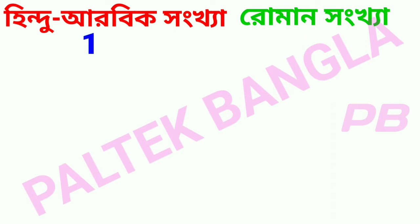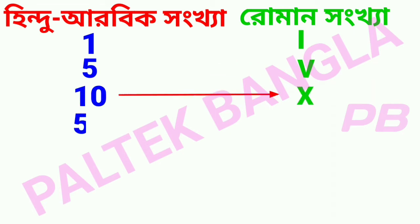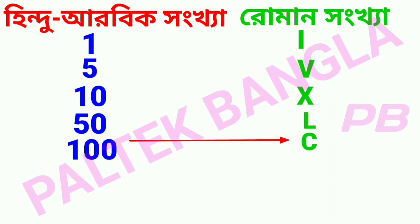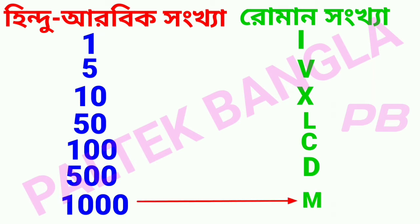In the Roman numeral system: I = 1, V = 5, L = 50, C = 100, D = 500, M = 1000. These are the standard Roman numeral symbols. The symbol values are fixed - each symbol corresponds to a specific numeric value in this system.